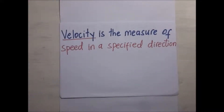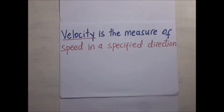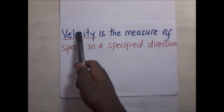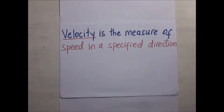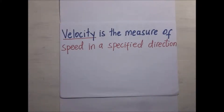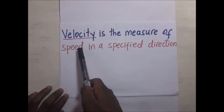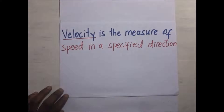Speed shares the same units with velocity. Velocity is the measure of speed in a specified direction. This brings us to the difference between the two: speed is a scalar quantity and velocity is a vector quantity. Scalar quantities are physical quantities that only have magnitude — these include things like mass, density, and area. Vector quantities have both magnitude and direction — these include velocity, acceleration, displacement, and so forth. Speed and velocity have the same units, only one is scalar and the other is a vector.